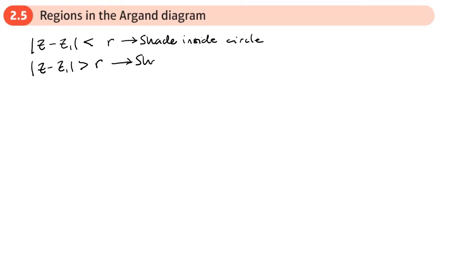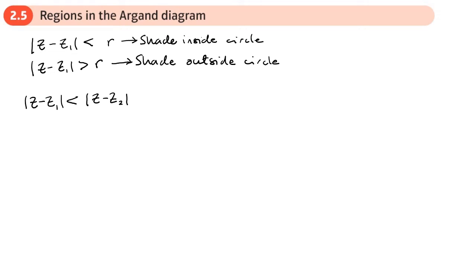If you have |z - z₁| greater than R, you shade the outside of the circle. Now for the perpendicular bisector type — we're used to seeing equals in between, but now this may have greater than or less than. If you've got the less-than symbol, you shade the side which is closer to z₁.